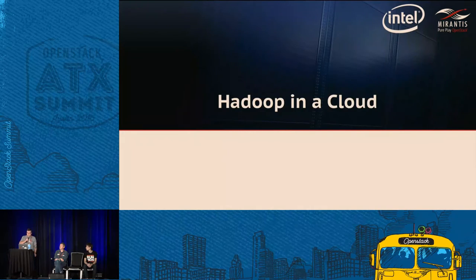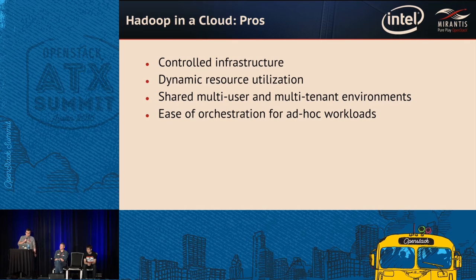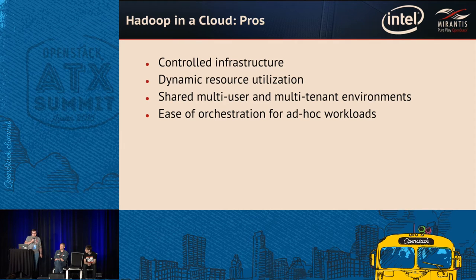A few words about the agenda: we are going to look at the Sahara project in OpenStack, the performance lab setup and challenges we encountered during testing, an overview of the testing itself, and some conclusions. First, why run Hadoop in the cloud? There are pros and cons. On the pro side, it provides a controlled infrastructure where you can deploy through the API and easily orchestrate different distributions of data processing frameworks such as Hadoop, Spark, etc. You can use it for dynamic resource utilization — for example, to use spikes in the labs to enable additional data processing workloads.